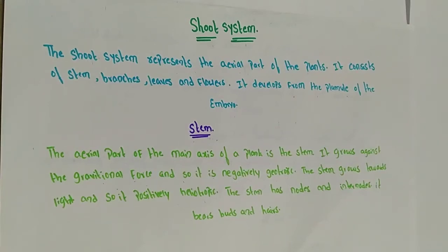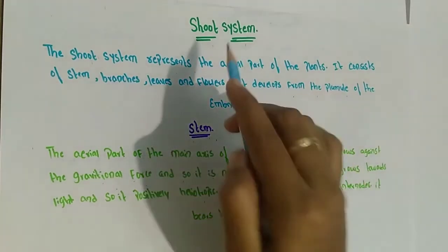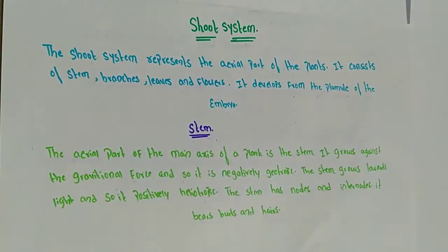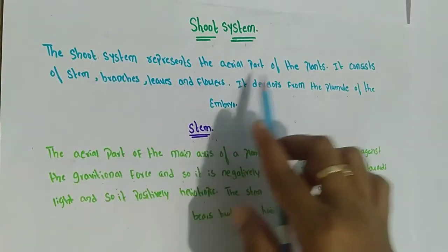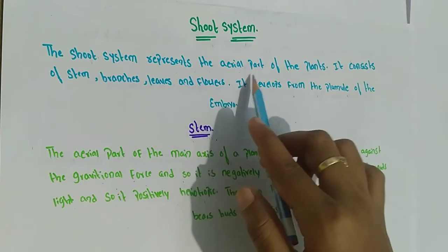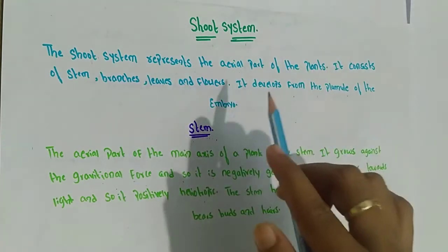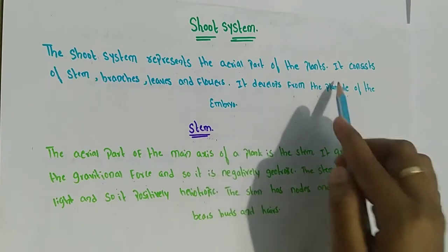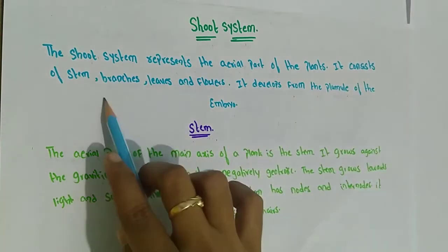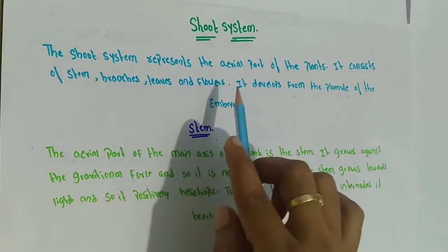Hello students, in this video we will learn about the shoot system. The shoot system consists of a stem which lies above the ground, along with appendages like leaves, flowers, and roots. It represents the aerial part of the plant — the parts which are exposed to air. It consists of stem, branches, leaves, and flowers.